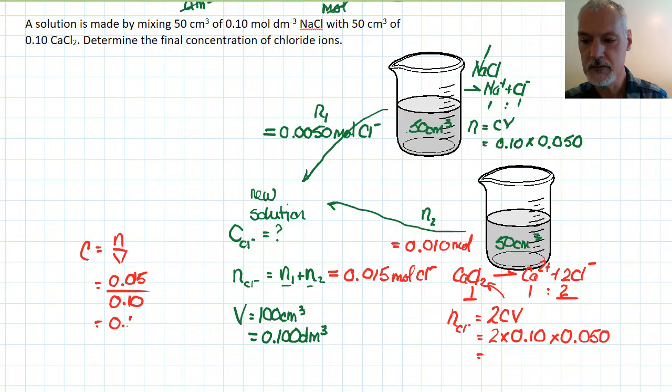Gives me a final of 0.15 moles per decimeter cubed of the chlorine ion, which we often represent with square brackets.